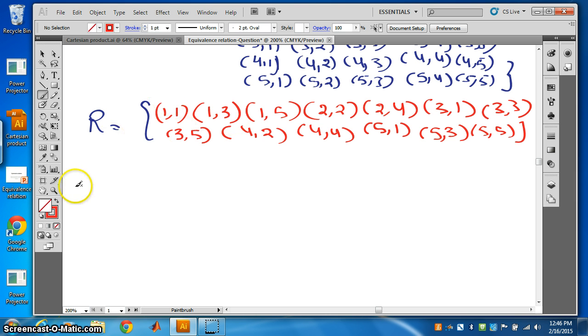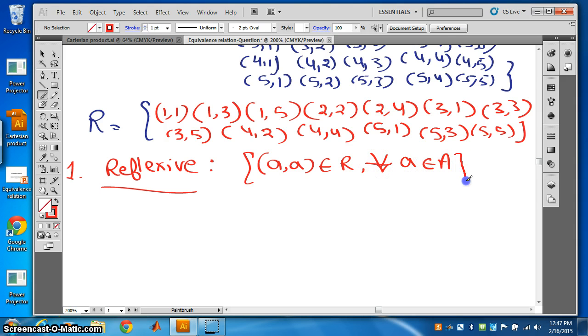Now we have to show R is an equivalence relation. So we start with the first property. We will check reflexive. Now what is reflexive property? That (a,a) belongs to R for all a in A.